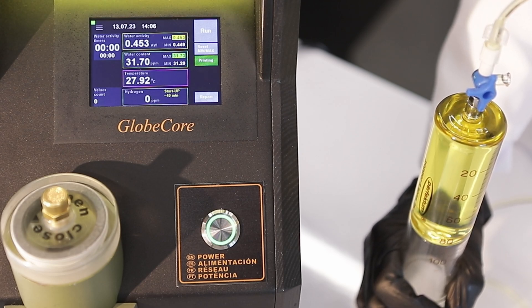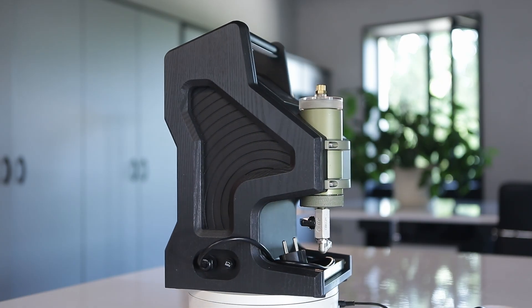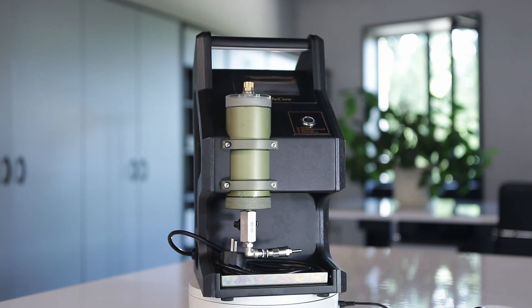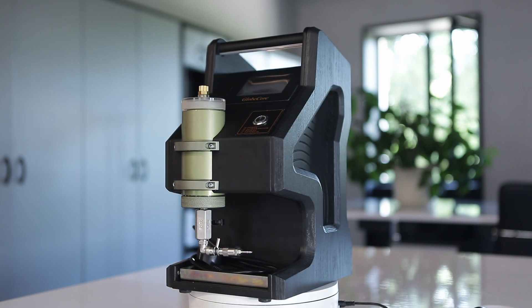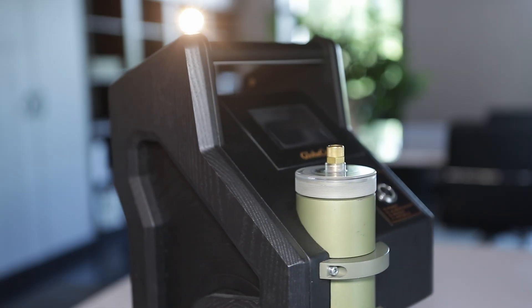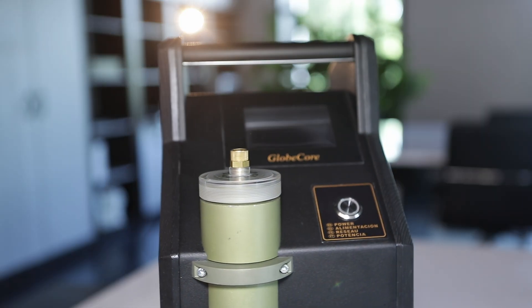The TOR-2 tester based on GlobeCore technologies can be ordered with a battery for autonomous power. This makes it possible to carry out an oil moisture and hydrogen express analysis even in conditions of limited access to the power grid.